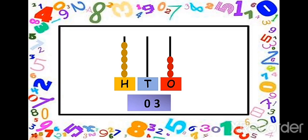Now tell me how many beads are in the hundreds place. Count: one, two, three, four, five. So we will write five. So the number has five hundreds, zero tens and three ones. Thus the number shown on the abacus is five hundred three. Wonderful.